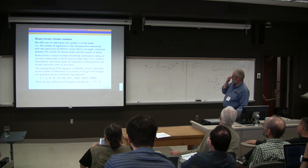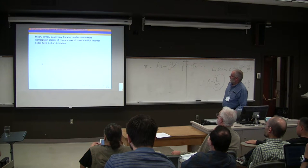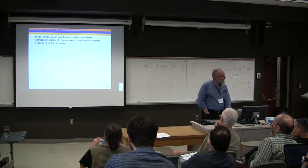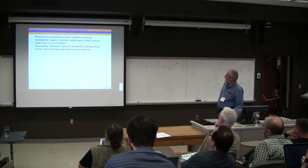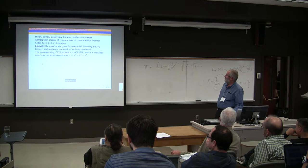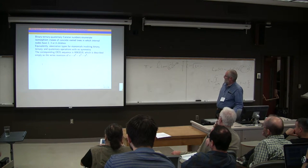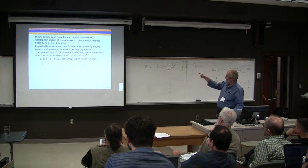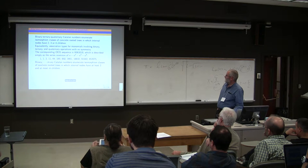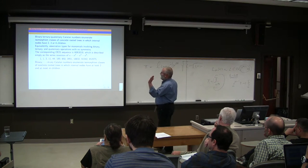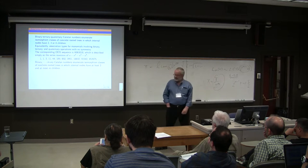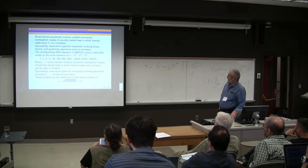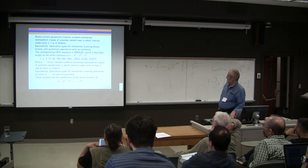Well, what if we extend this and go binary, ternary, quaternary? There we're talking about trees in which internal nodes have two or three or four children. And equivalently, association types for binary, ternary, quaternary operations. Again, well, this is not too surprising. It's in the encyclopedia, and the generating function is the series reversion of that polynomial. And of course, we can go all the way up to binary up to m-ary operations and get binary up to m-ary Catalan numbers.